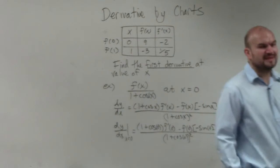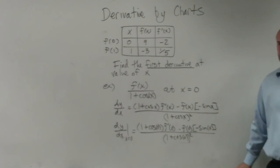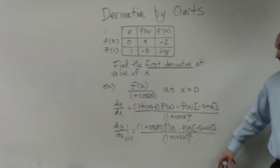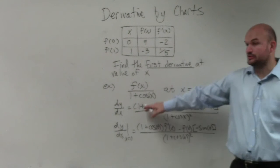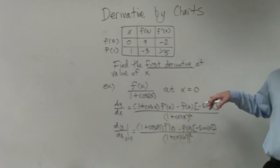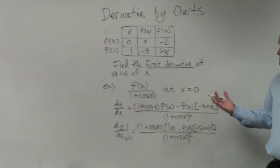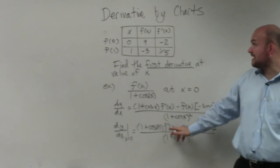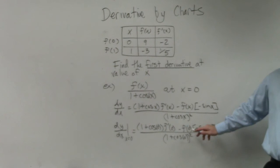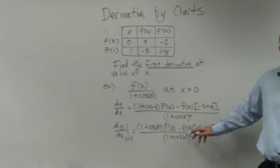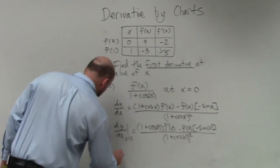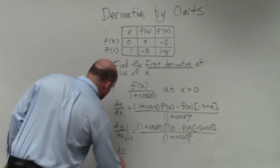I added an extra step here. You find your derivative and then you evaluate it at 0. It's important that by using the table, we know what f prime of 0 is and what f of 0 is. I'm going to work through these and explain them out.